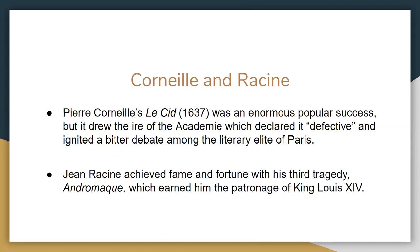We see two major playwrights here: Pierre Corneille and Jean Racine. A very important play from Corneille called Le Cid was an enormous popular success, but it drew the criticism of the academy, which declared it defective and ignited a bitter debate among the literary elite of Paris. It must have been very frustrating for Corneille — he had a very popular and entertaining play that was criticized by the elite simply because it didn't follow the rules: the verisimilitude, the unities, all of those restrictions. From there on out, Corneille continues to write about the repression of passion in favor of duty.